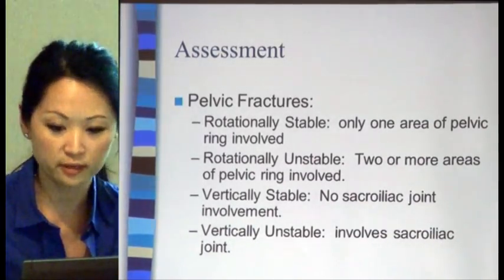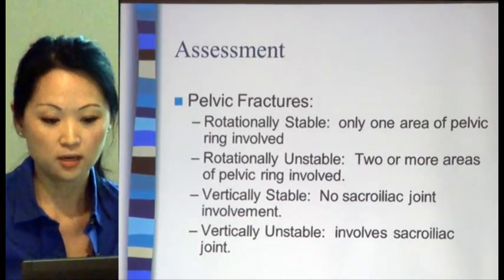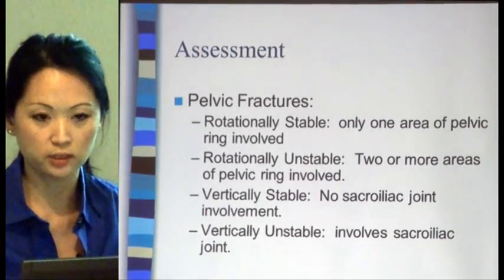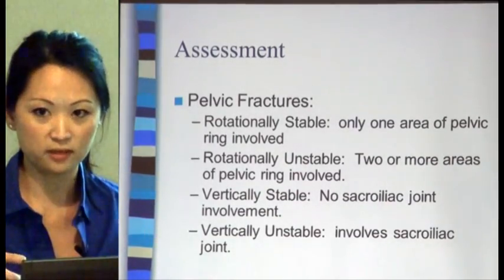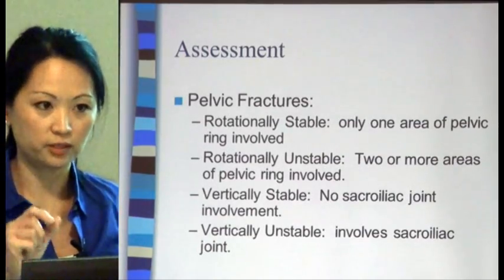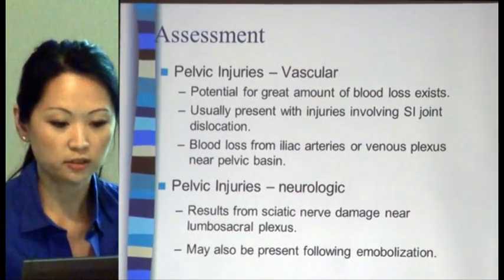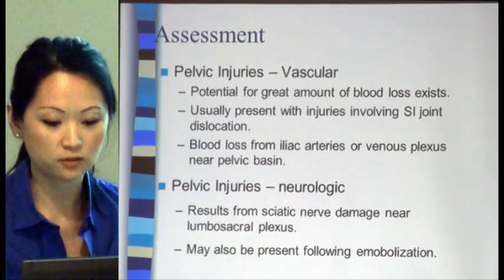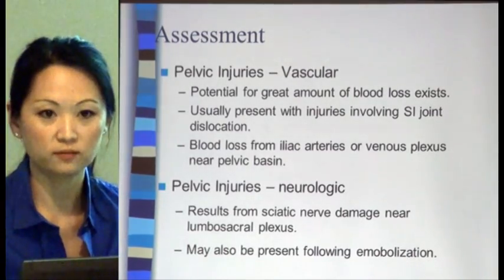A pelvic fracture where one area of the pelvic ring is involved is considered rotationally stable; where two or more areas are involved, it's rotationally unstable. Vertically stable versus unstable depends on whether the SI joint is involved. It's really difficult to injure just one area of the pelvic ring — it's like a pretzel; usually two parts break. Because the pelvis is so vascular, there's potential for large blood loss from the iliac arteries or the venous plexus near the pelvic basin, usually with injuries involving the SI joint.